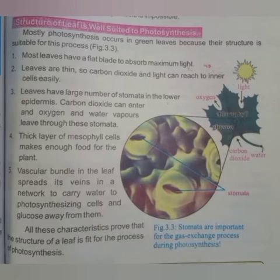Photosynthesis occurs in plants — آپ کو پتا ہے کہ photosynthesis plants میں ہوتی ہے — and there is a specific part of the plant where it occurs; it does not occur in every part. This process occurs only in the green leaves of the plant. Most leaves have a flat blade to absorb maximum light. بہت ساری leaves کا structure flat blade ہوتا ہے اور وہ زیادہ سے زیادہ light کو absorb کرتے ہیں۔ In this diagram you can see there is a leaf and there is sunlight.